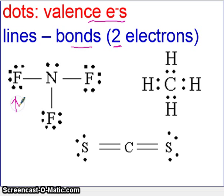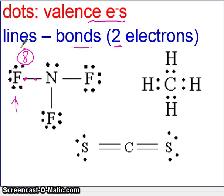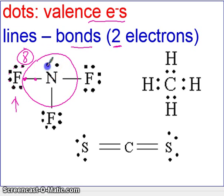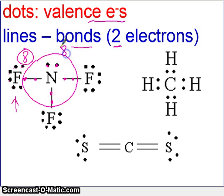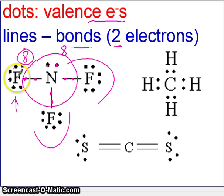Notice this fluorine right here has six lone-pair electrons, and then the line has two electrons, so eight total — nice and happy like a noble gas. Notice this nitrogen has two lone-pair electrons plus three bonds, each worth two electrons, for a total of eight. Nitrogen has eight electrons. These two fluorines likewise each have eight valence electrons. Everybody's obeying the octet rule.